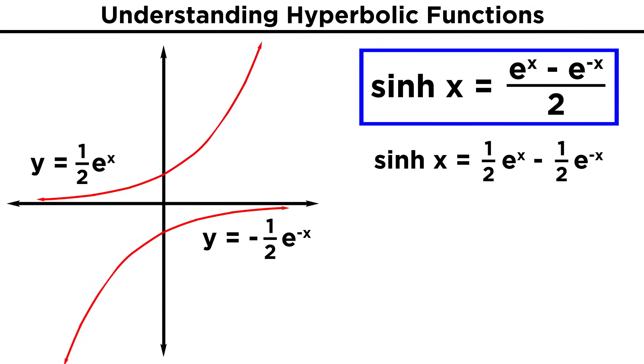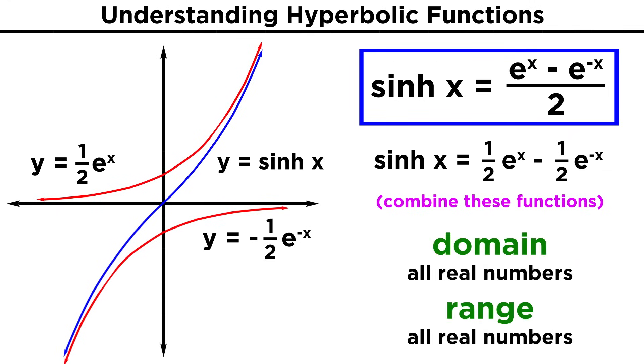If we sketch these two curves, we get a hyperbola, and the sum of these two curves at every point will give us hyperbolic sine, which we can see crossing the origin and then getting closer and closer to either section, as we go to positive and negative infinity. The domain and range are both all real numbers.